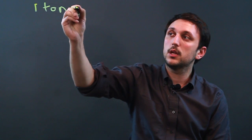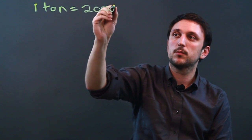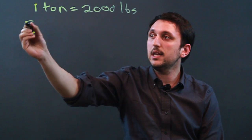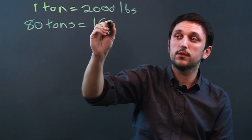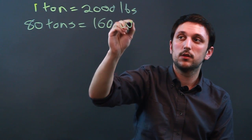Well first, 1 ton equals 2,000 pounds. So 80 tons equals 160,000 pounds.